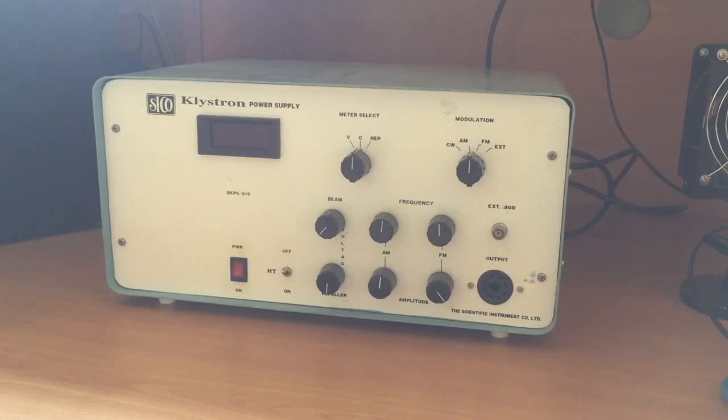First, I am going to show you the klystron power supply. Here we are going to set voltage, current, and repeller with beam and frequency. This is the initial part of the experiment.